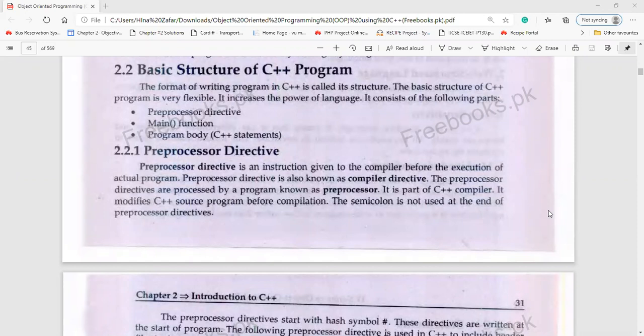In the basic structure, we will see which main portions are required for our program. Which important portions and parts are needed - the first is Pre-Processor Directive, Main Function and Program Body.